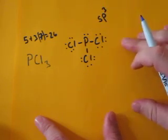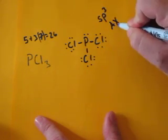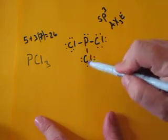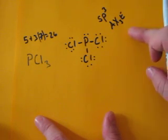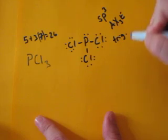Now if you need the shape, we've got to start with the general formula, which is AX3E. The A is the central atom, the X are the 3 chlorines, and the E is the lone pair on top of the phosphorus. This gives you a trigonal pyramidal shape.